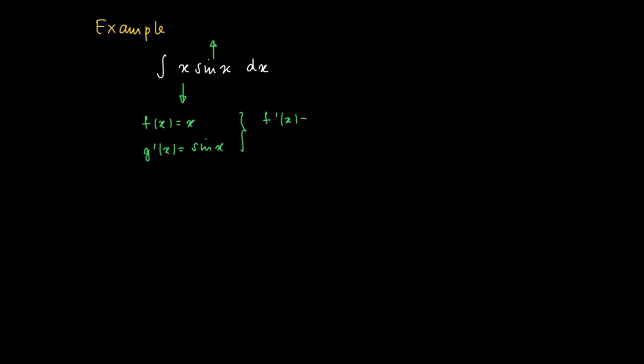So f' equals 1 and the primitive of g' equals minus the cosine of x. The arrow down will be used to indicate that we differentiate one of the terms, and the arrow up is integration. So we now use partial integration.